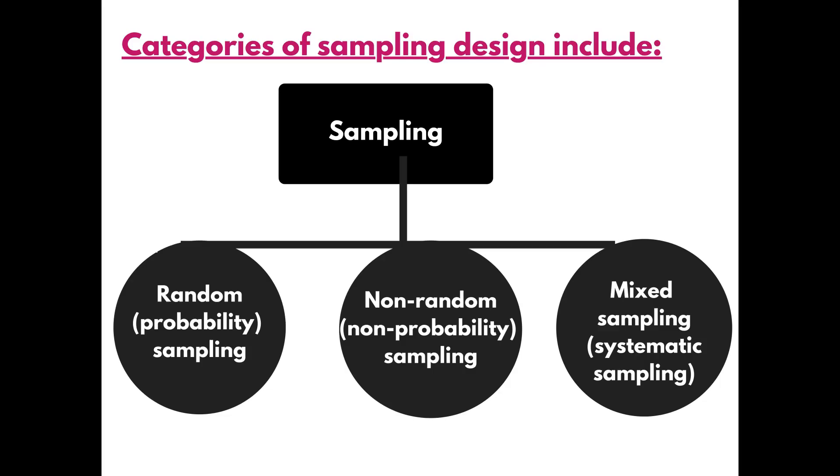Categories of sampling design include random or probability sampling, non-random or non-probability sampling, mixed sampling design, or systematic sampling.